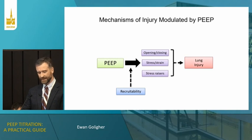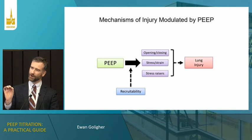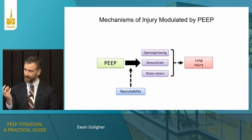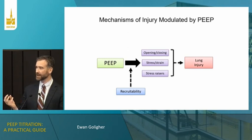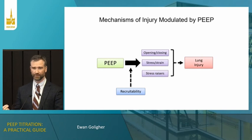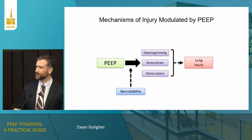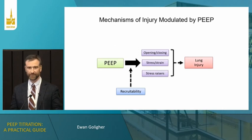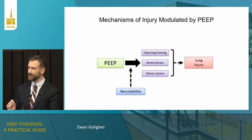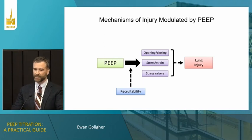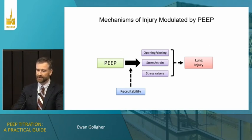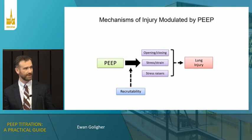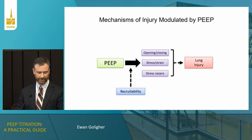The idea of stress raisers is that local inhomogeneities — small regions of collapsed lung with open areas immediately around them — function as stress multipliers. The interesting biomechanics is that the inflated regions around collapsed inhomogeneous areas experience up to five times the stress they would experience if the collapsed region were actually open. By recruiting those regions and improving homogeneity of ventilation distribution, we can potentially prevent lung injury. But all of this is contingent upon the lung's response to increased pressure — what we call recruitability.